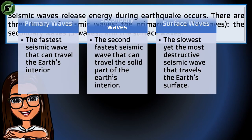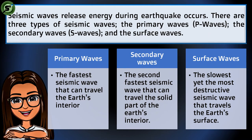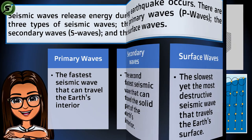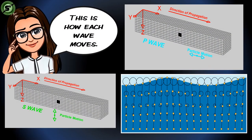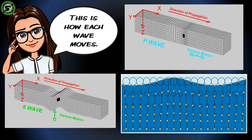There are three types of seismic waves: the primary waves or P-waves, the secondary waves or S-waves, and the surface waves. P-waves and S-waves travel through the earth's interior, while surface waves travel along the surface of the earth. P-waves are the fastest kind of seismic wave, and surface waves are the slowest.